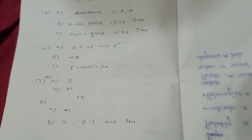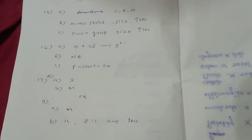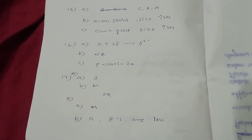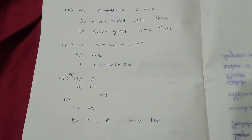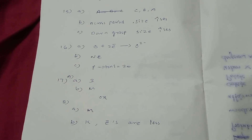Question number 15: A — C; B — A. Across period, size increases. C — Down group, size increases.